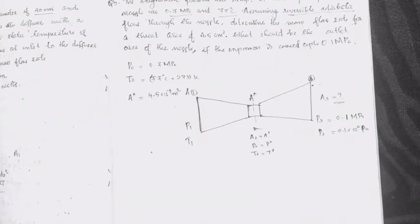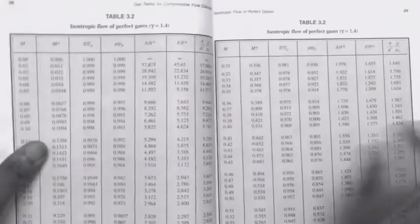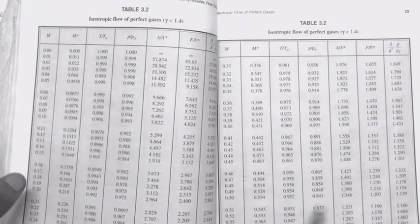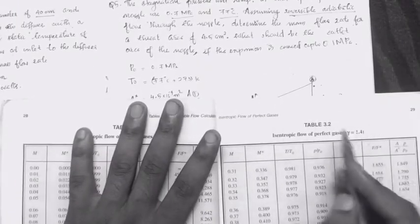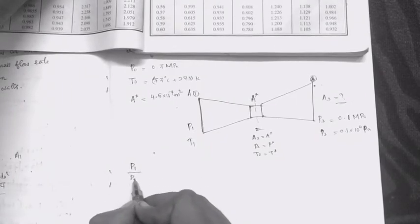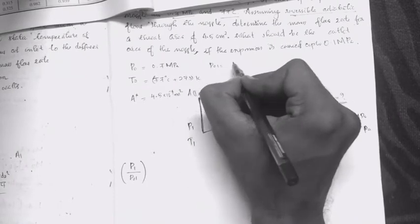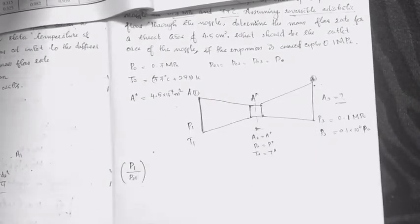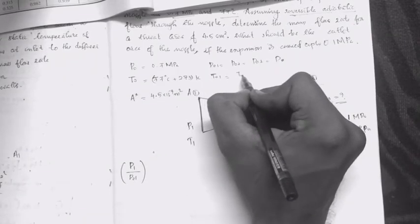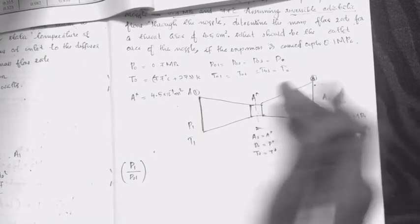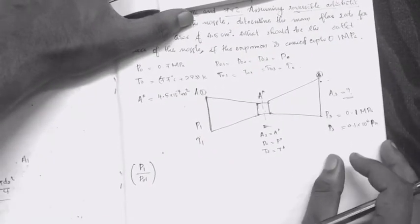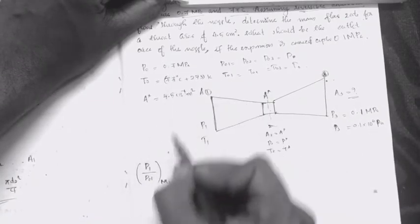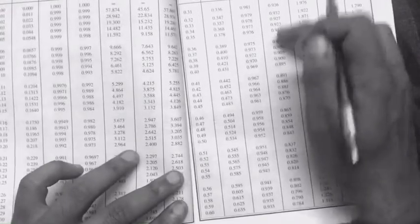Now let's go to the isentropic flow table with gamma equal to 1.4. We look up P by P0 and T by T0 values. Since P0 is equal to P1, the stagnation pressure at the inlet is 0.7 MPa. We use the isentropic flow table to find the corresponding Mach number and static properties.